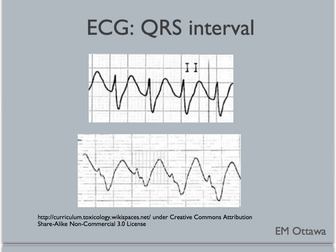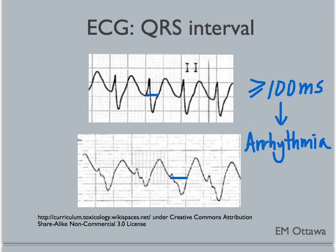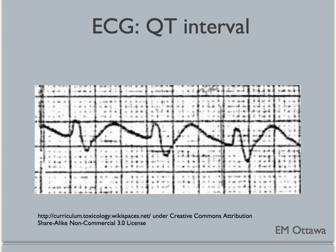We then measure the QRS interval. An interval more than 100 milliseconds means the patient is sick — they will likely develop life-threatening arrhythmia and/or seizures. The longer the QRS interval, the sicker the patient is. We also look for a prolonged QT interval; again, the longer the QT interval, the more likely arrhythmias will develop.